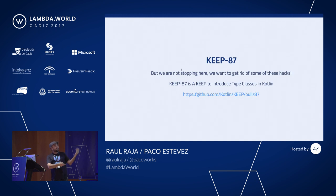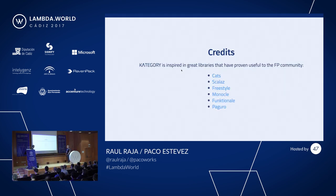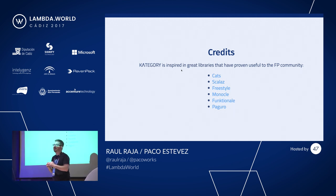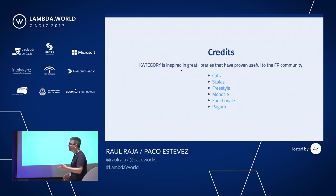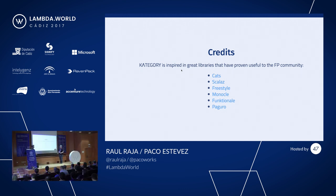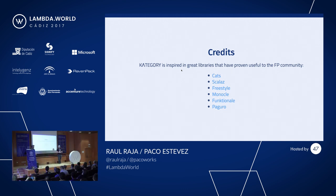If you like what you're seeing, please go to the KEEP and voice your opinion on why it's important to you if you're doing Kotlin. A big thank you to all the inspirations and everybody that helped us make this library go forward. This came from an initial small idea and has fleshed out into a whole project and ecosystem. Some of the libraries we took inspiration from: Cats and ScalaZ, well known in the Scala community; the Freestyle library from 47 Degrees for free monads; Monocle for optics; Funktionale, the current library for functional programming in regular Kotlin; and Paguro by Jim in the United States for persistent collections.